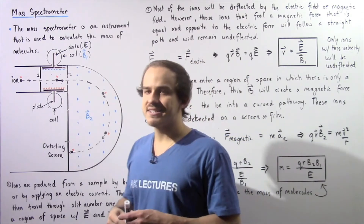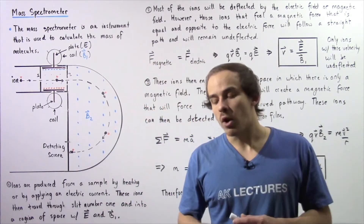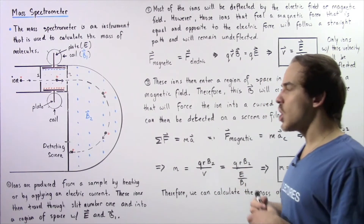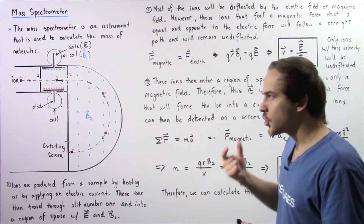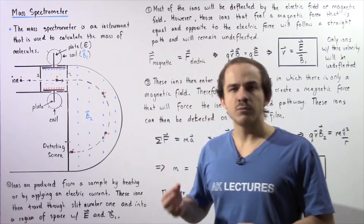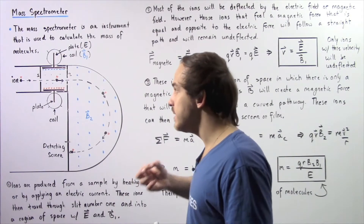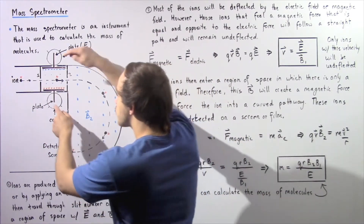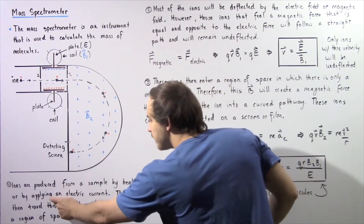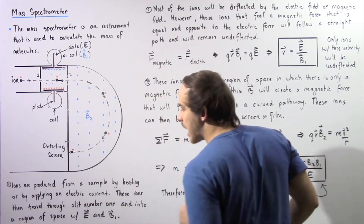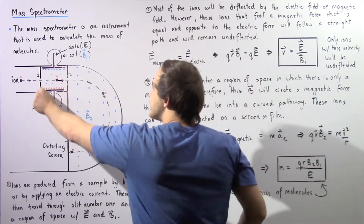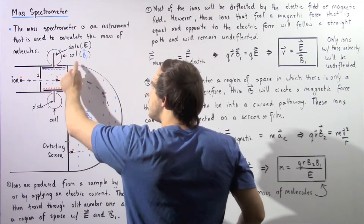Suppose we are given a certain sample of molecules whose mass we want to measure. The first step is to expose that sample to either a heat source or apply an electric current, which will ionize our molecules and produce ions that have an electric charge. Those ions can then be made to travel in a straight pathway through slit number 1 and into a region of space that contains an electric field E and a magnetic field B1.